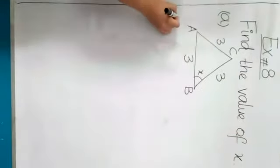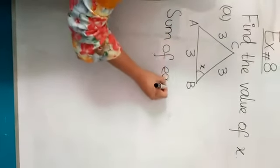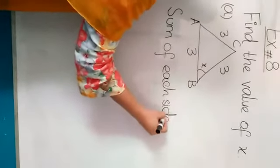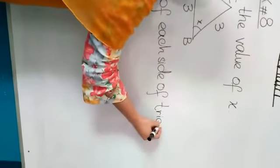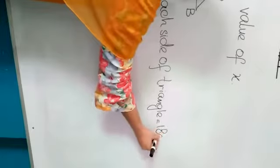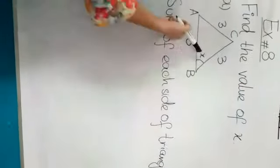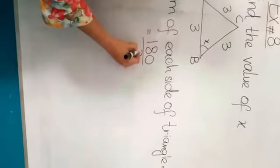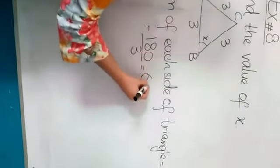So sum of angles of triangle is equal to 180. All 3 angles are equal, so we need to find the value of x. 180 divided by 3, and 3 6 are 18 and 0. So its unknown angle is 60 degrees.